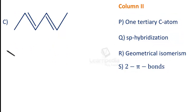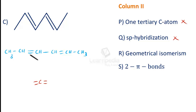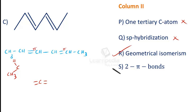Compound C has the structure: CH3-CH=CH-CH=CH-CH3. As there is no branching, there is no tertiary carbon. There is no triple bond and no carbon forming two double bonds, so no SP hybridization. However, the double-bonded carbons are each attached to two different groups — hydrogen and a methyl group — so geometrical isomerism is exhibited (property R). With two double bonds, there are two pi bonds (property S). The correct match for C is R and S.